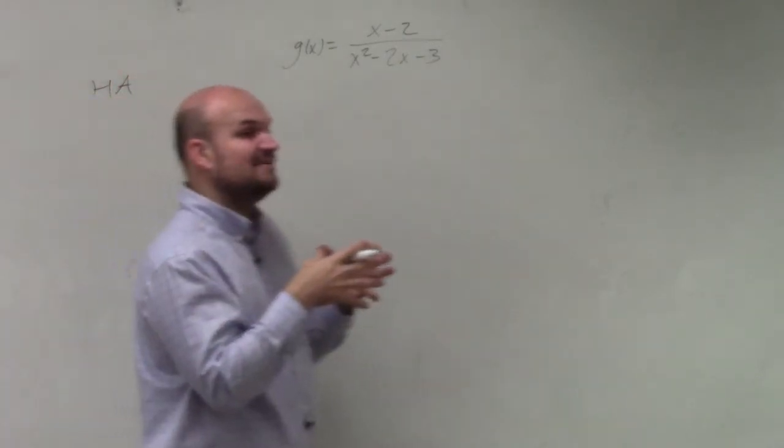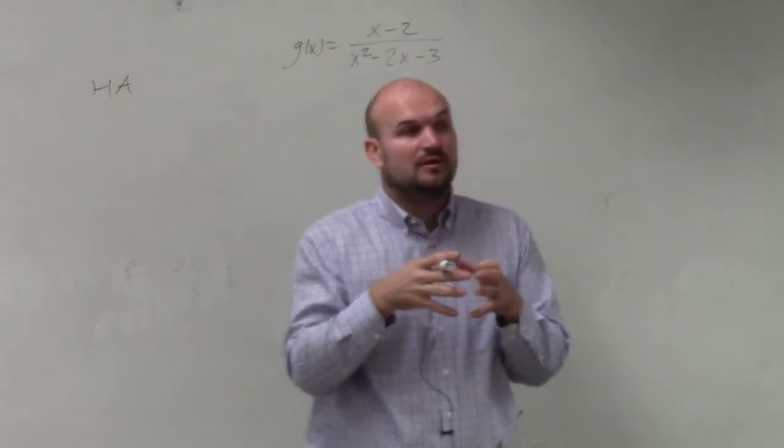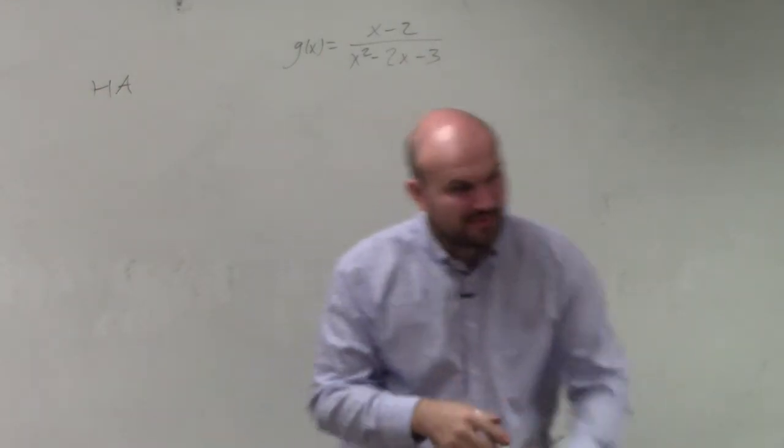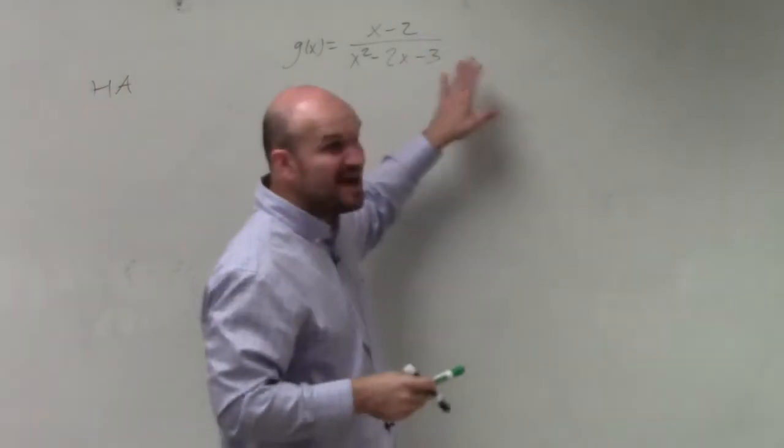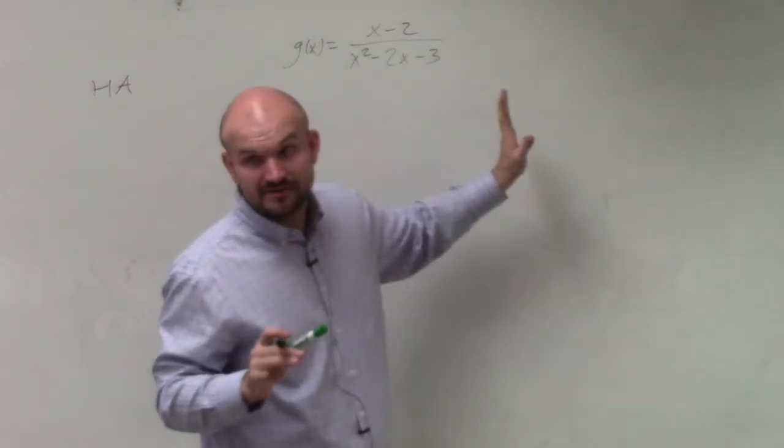Horizontal asymptote. Now, to identify horizontal asymptotes, before we even do anything, if you guys remember, whenever we see something that could be factorable, always just want to factor it, right?